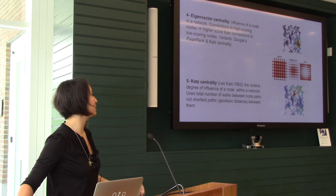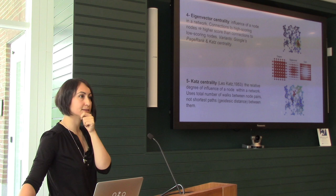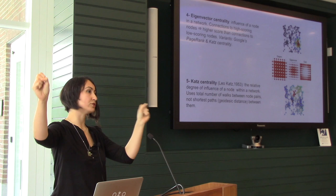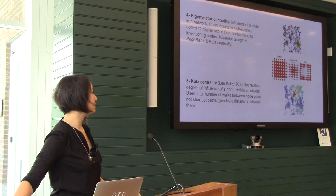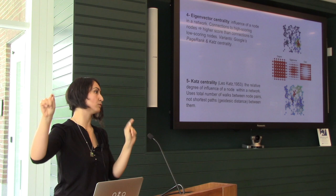Then there's Katz centrality, my most favorite one, developed in 1953, which is the relative degree of influence of a node within a network — the total number of walks between node pairs. There can be different ways that on a particular graph two nodes could reach each other, different paths. Katz centrality takes into consideration the total number of walks that exist between node pairs. So it's not just the direct connection, not just the shortest paths — it's the total number of possible walks that happen between them.